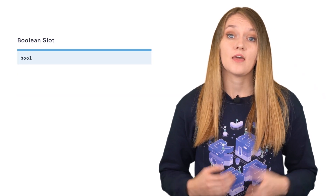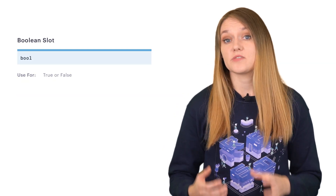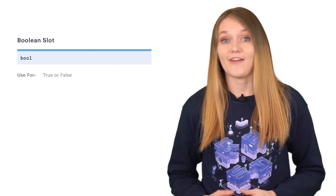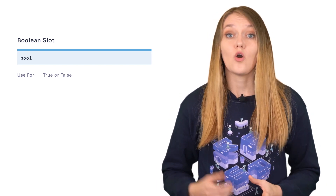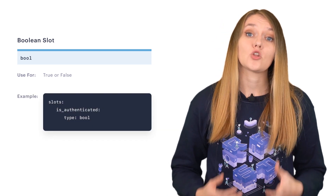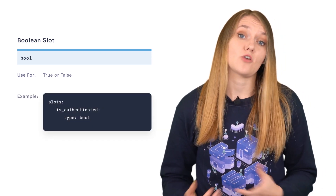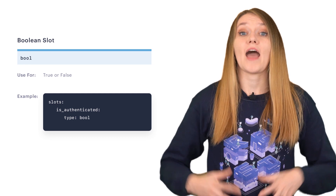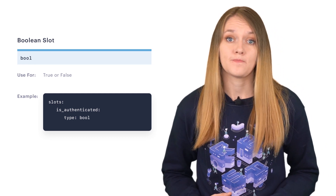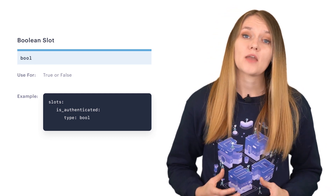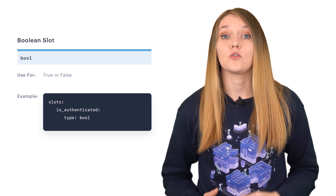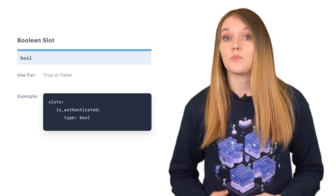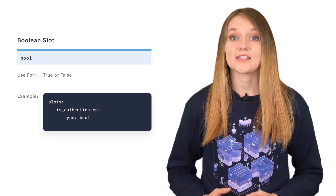The Boolean slot type is useful when dealing with details that can get two possible values — true or false. Here, not only the presence or absence of the slot value is important, but also the actual value makes a difference. The dialogue manager model checks if the slot value is true and takes that into account when making predictions for the next action.